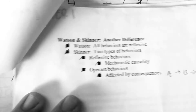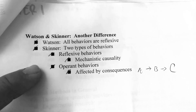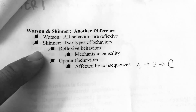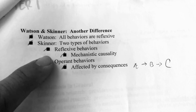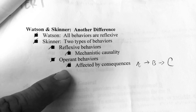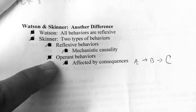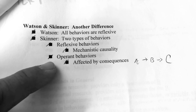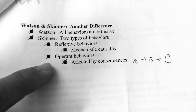The key difference between Watson and Skinner is that Watson believes all behaviors are reflexive — basically involuntary or unconscious reactions to stimuli. Skinner, however, has two types of behaviors: reflexive behaviors, which are the mechanistic, natural biological mechanisms, and also operant behaviors, which are affected by consequences. Operant behavior produces a kind of consequence, like dog saliva in response to meat powder.